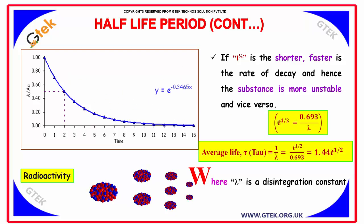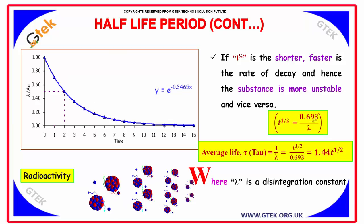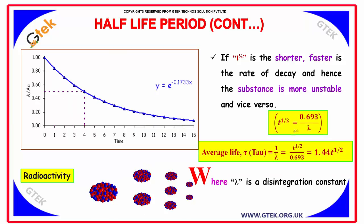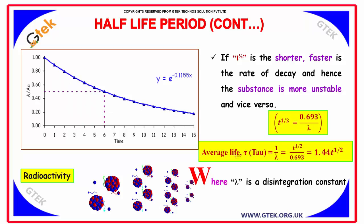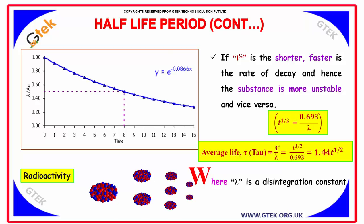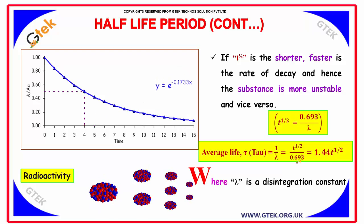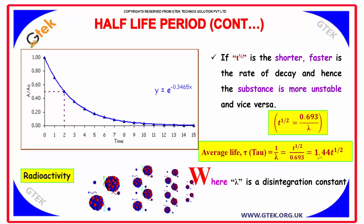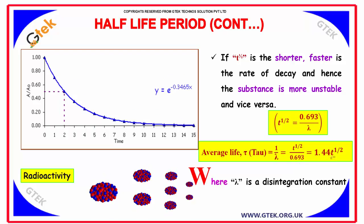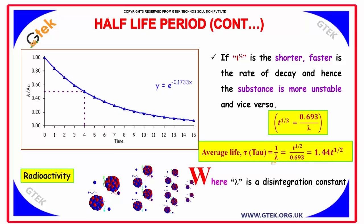T half is equal to 0.693 divided by lambda, so average life tau is equal to 1 by lambda is equal to T half divided by 0.693 which indicates 1.44 into T half. Lambda is the disintegration constant.